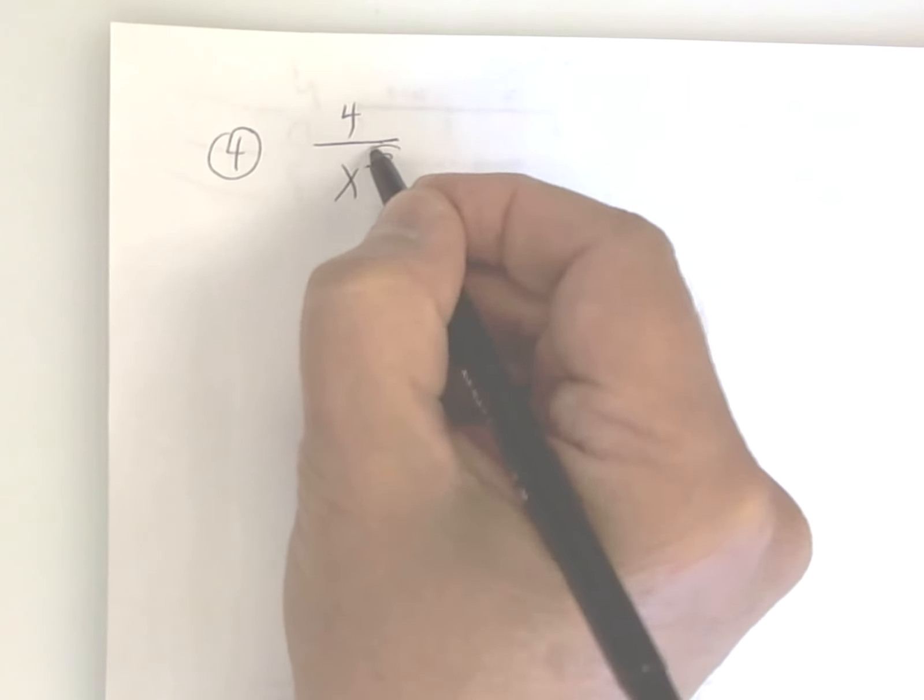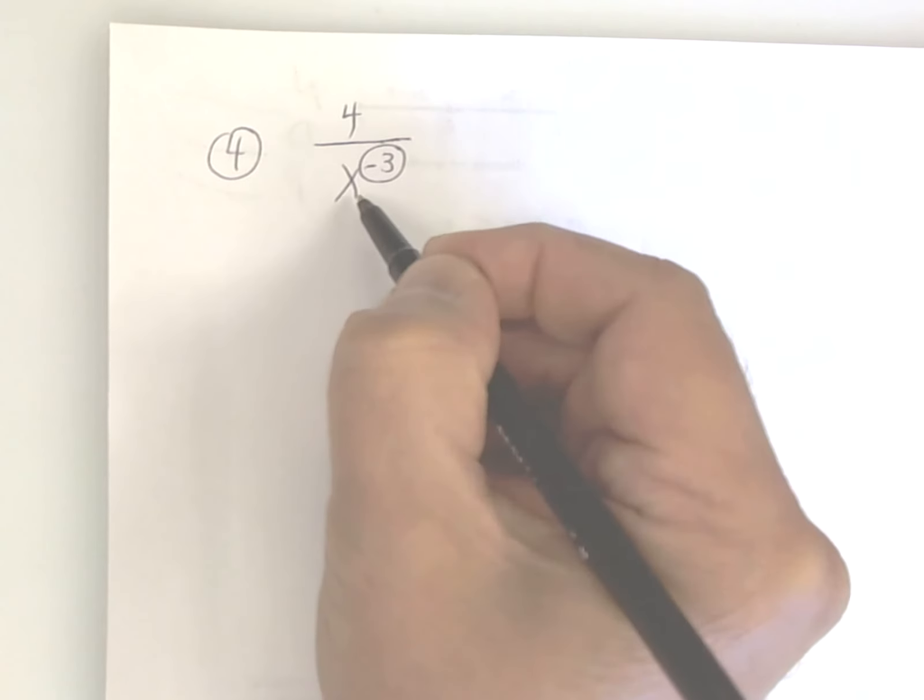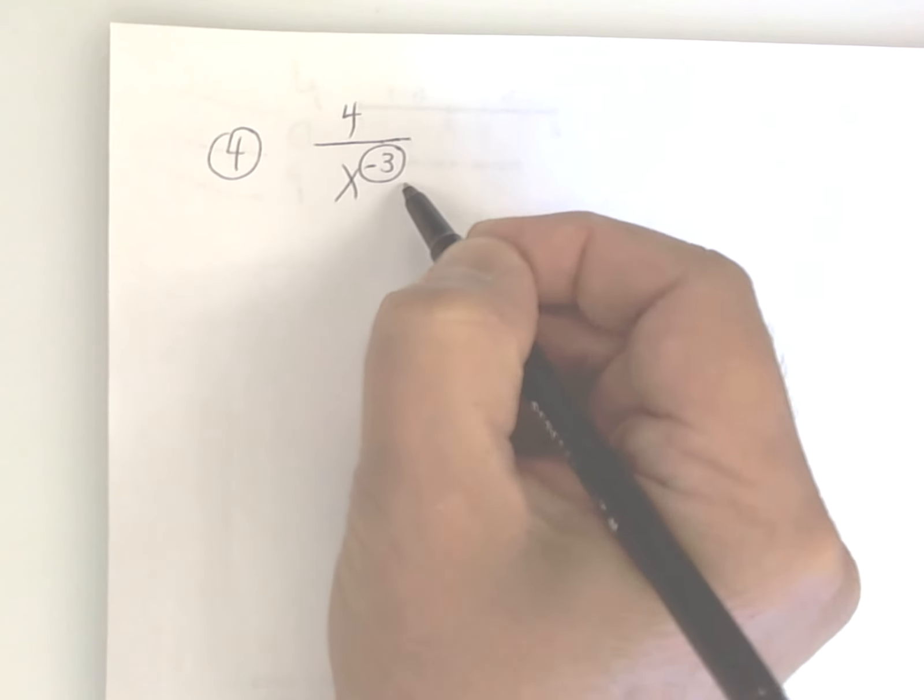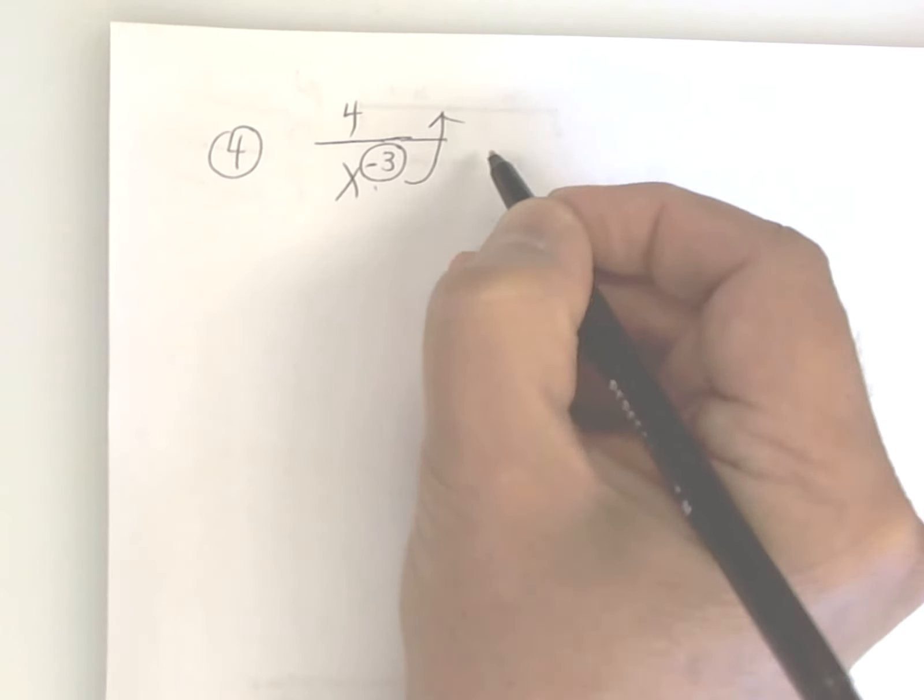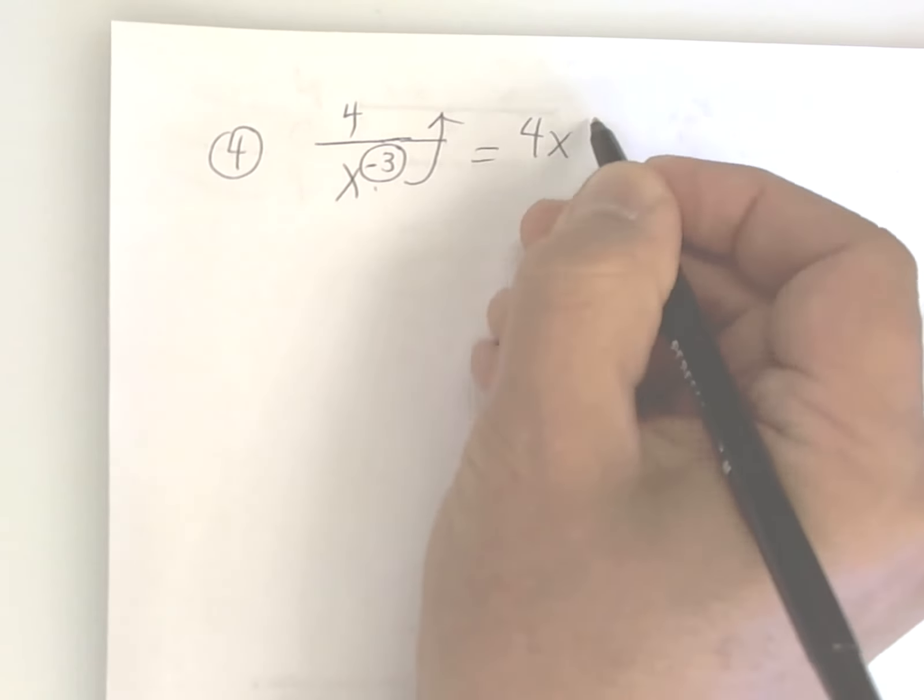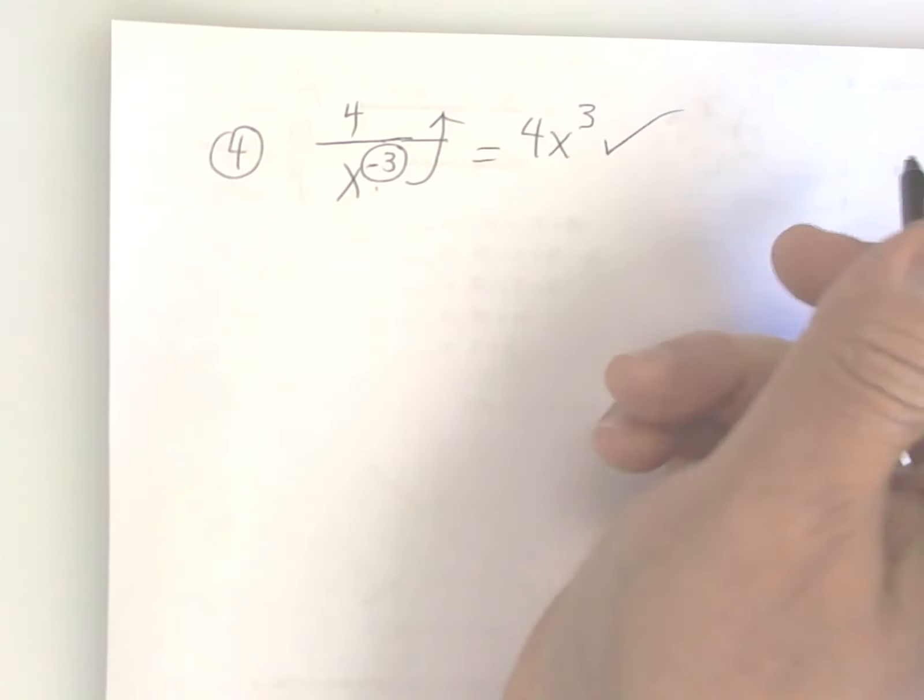You see how this is a negative? They don't want a negative, so you take the x to the negative 3 and you move it to the top. And the sign changes, so you end up with 4x to the positive 3, and that's all you can do.